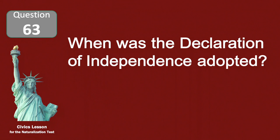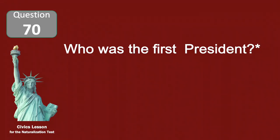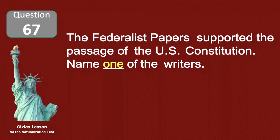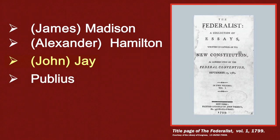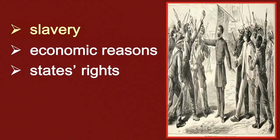When was the Declaration of Independence adopted? The Federalist Papers supported the passage of the U.S. Constitution — name one of the writers. Name one problem that led to the Civil War. Slavery.